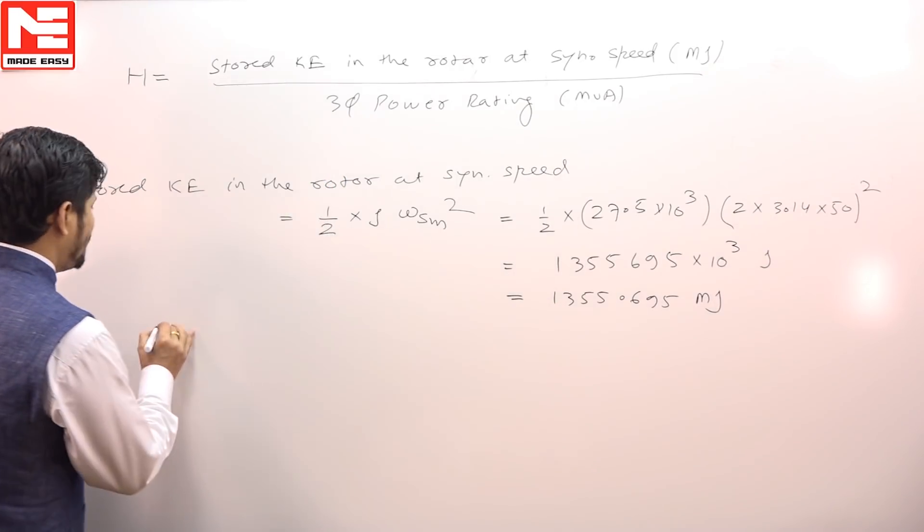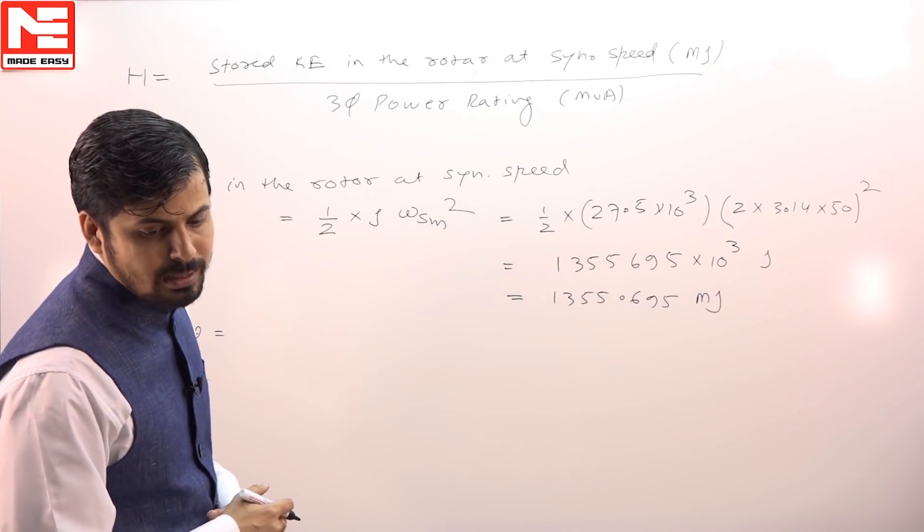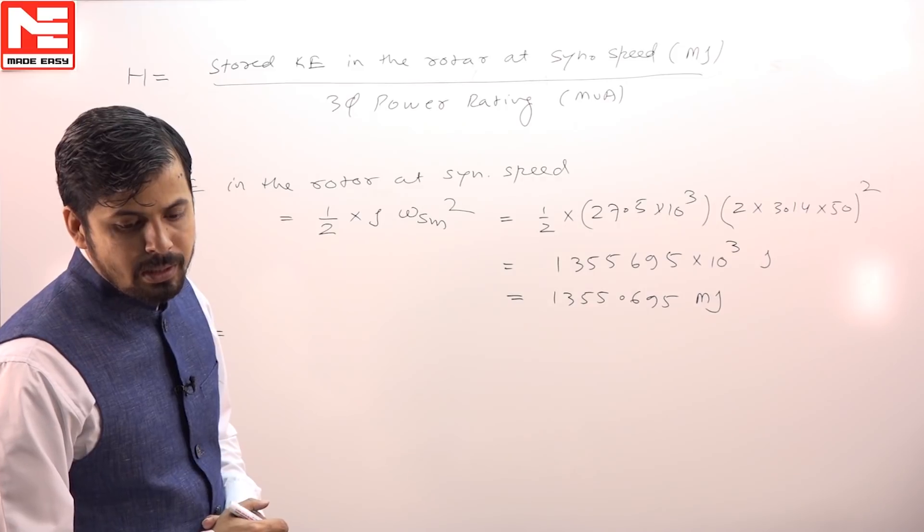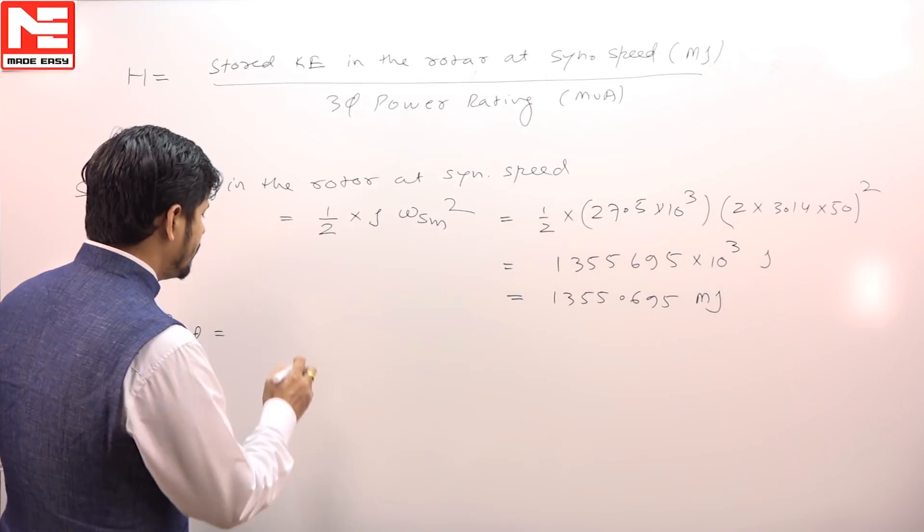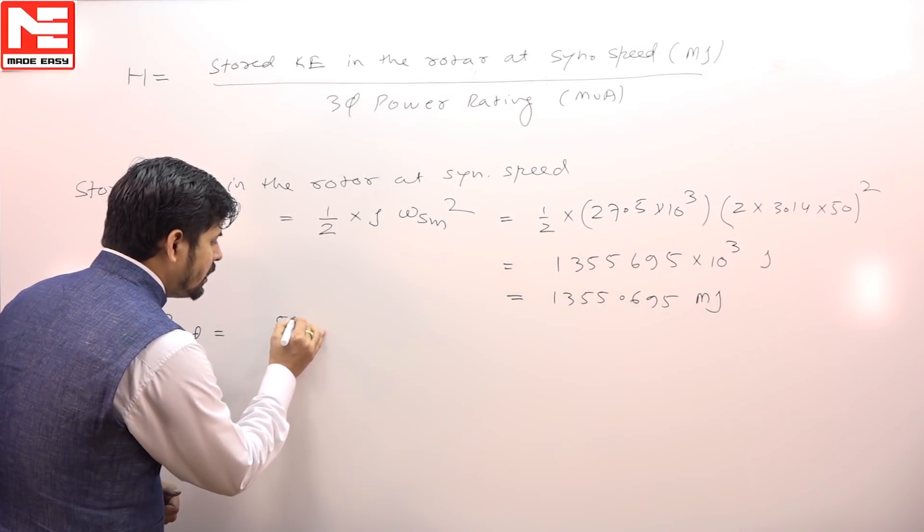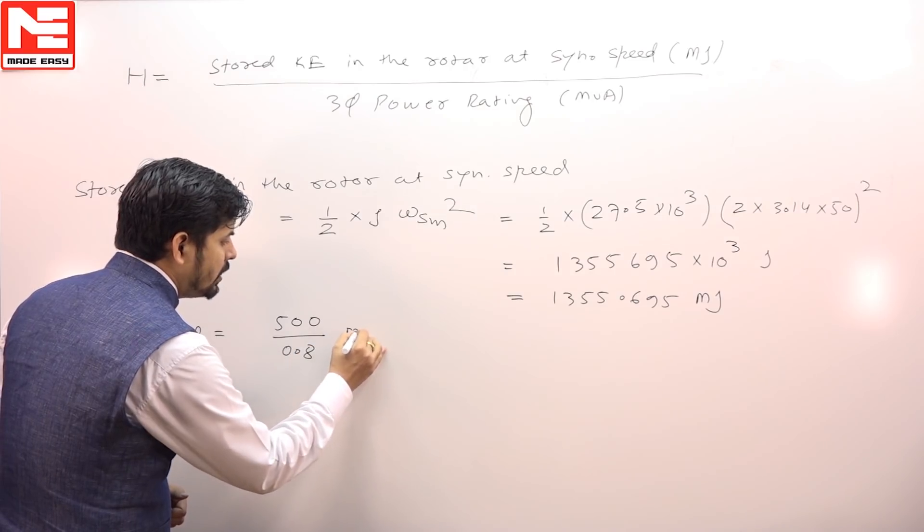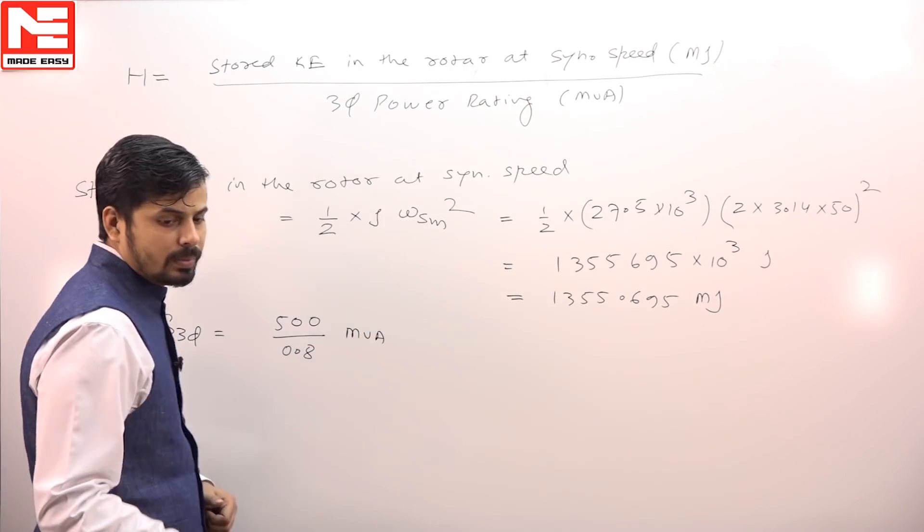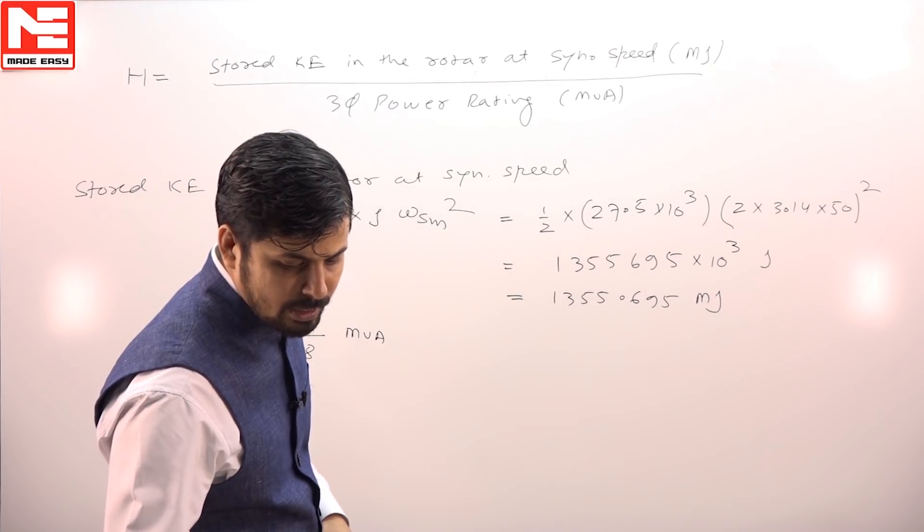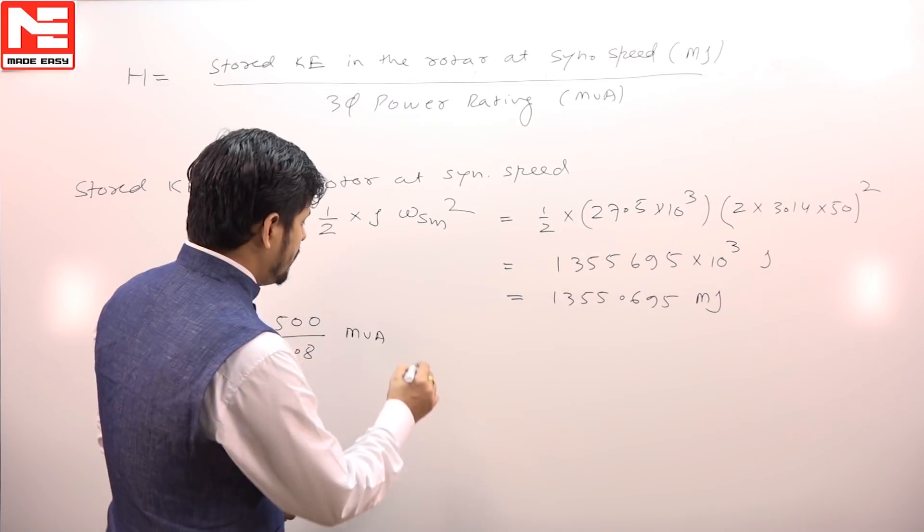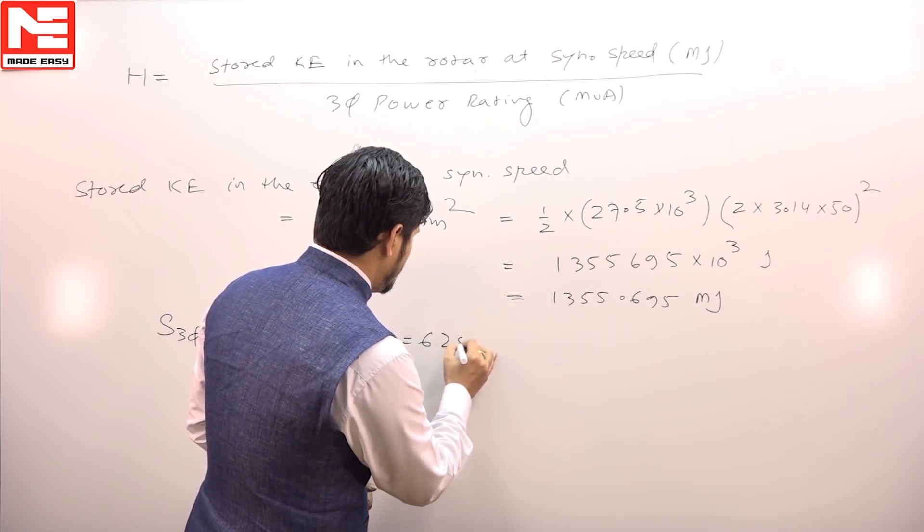What is the 3-phase power rating of the machine? The machine has a 500 megawatt, 0.8 power factor rating. It means in MVA it is 500 divided by 0.8 MVA, which equals 625 MVA.